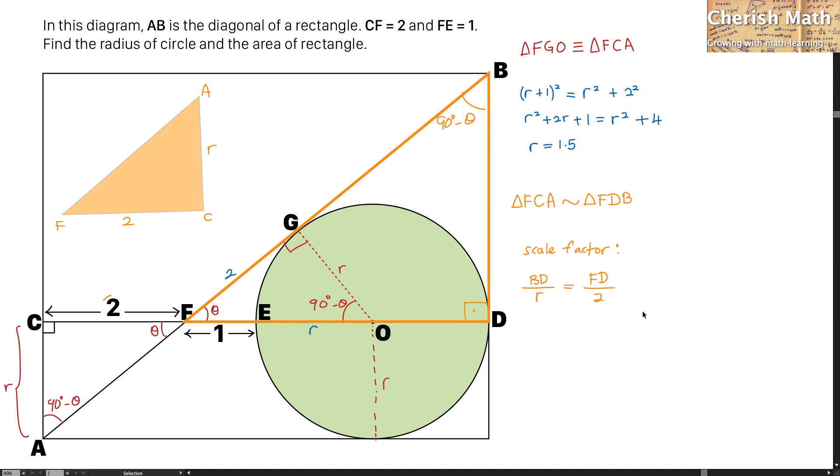And by filling up for the length of FD which is 1 plus the radius of 1.5 plus the radius of 1.5, this is going to be cross multiply the values I'm going to get the BD as 3 units.